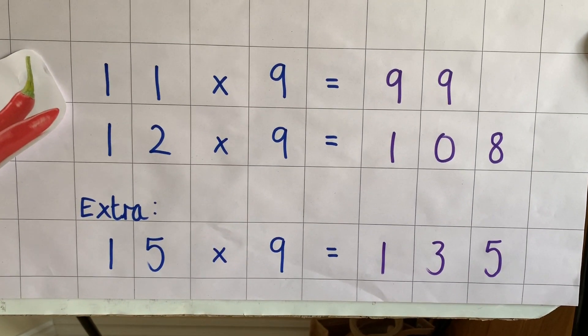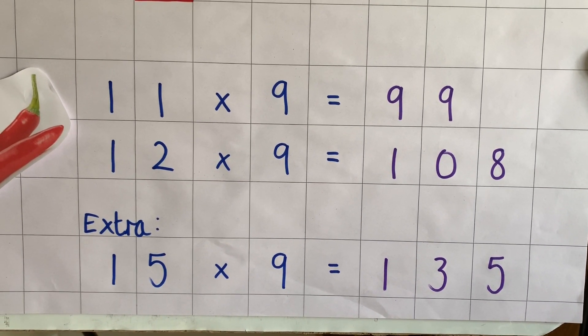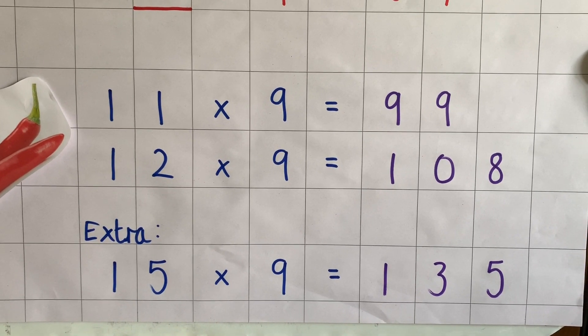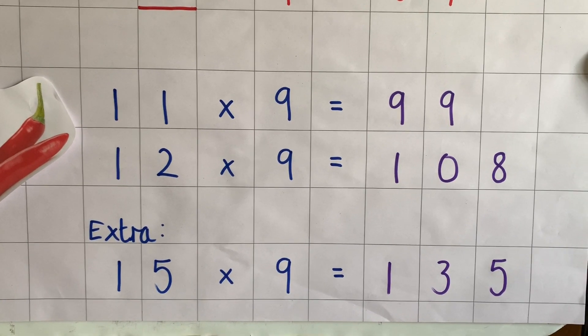Hopefully you had a go at the extra challenge: did you realise that if you did 10 times 9 and 5 times 9 and then added them together, you get the answer of 135? Great work today. Hopefully the video has helped you with your nines. If you found them tricky, go back to the beginning and have another go. It's really important to learn your times tables because it helps with multiplication, division, and fractions. Keep up the practice and well done!